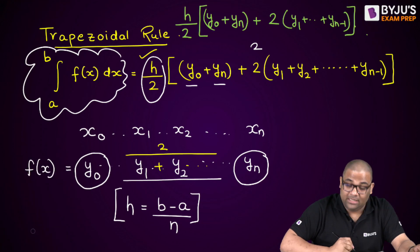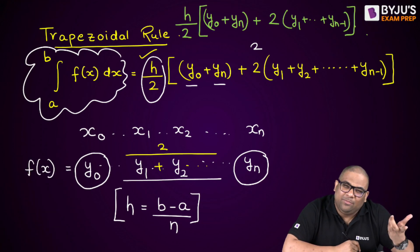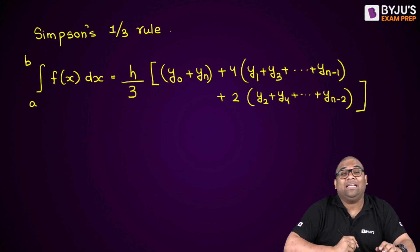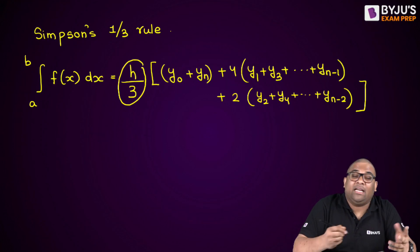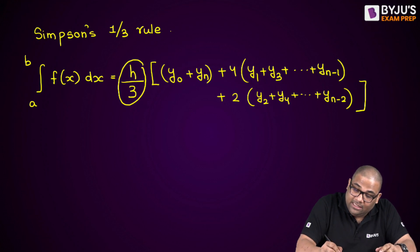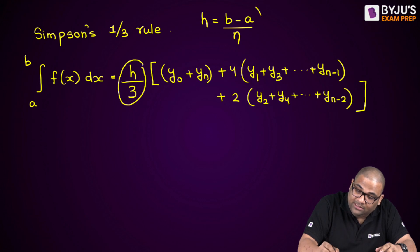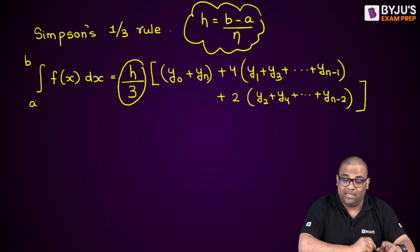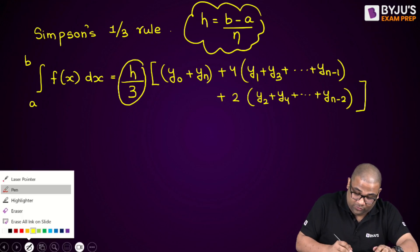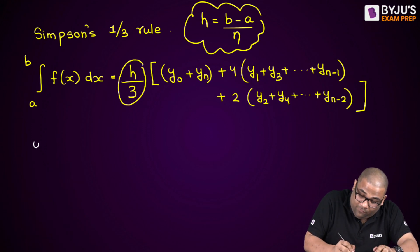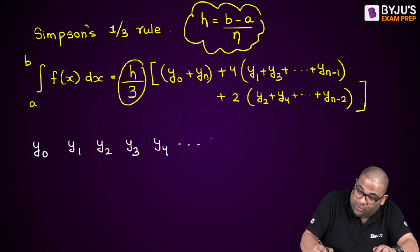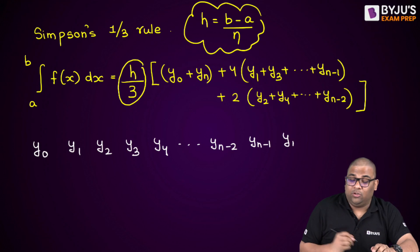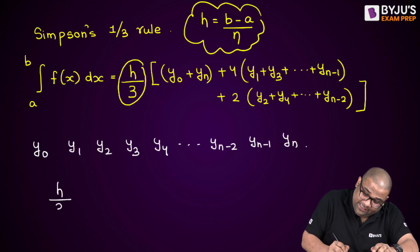Now for Simpson's one-third rule — notice the '1/3' term — it will be h/3 instead of h/2. The h remains the same: h = (b−a)/n. But another difference is in how the y-values are grouped. Suppose we have y₀, y₁, y₂, y₃, y₄, ... yₙ₋₂, yₙ₋₁, and yₙ. The integration begins with h/3, then y₀ and yₙ same as trapezoidal.